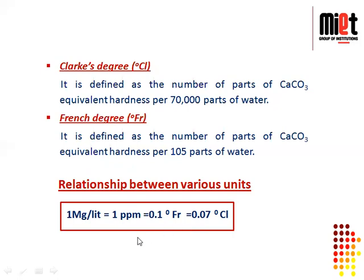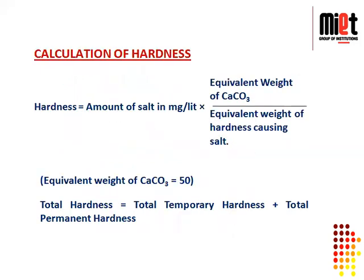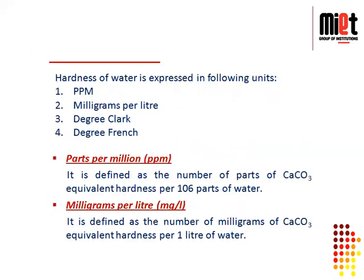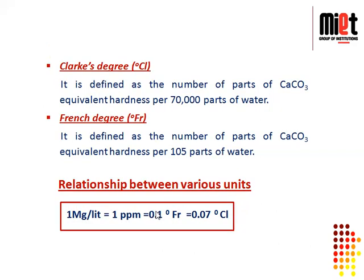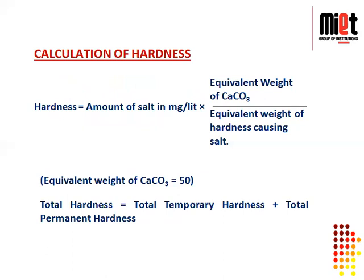These interrelations will help to solve numericals associated with hardness of water. The formula for hardness equals the amount of salt in mg per liter. An important point to remember: you must not count in kg or grams. The unit used is mg per liter, so if the amount of salt is given in kg or grams, you must convert it to mg first.